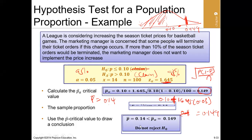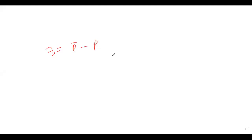Looking at this question again — in the previous video I showed you how to state the hypothesis. We are testing for a sample proportion of 0.14. The z-value of a proportion is: sample proportion minus population proportion, all over the standard error — that is, the square root of P times (1 minus P) all over N. The sample proportion is 0.14.